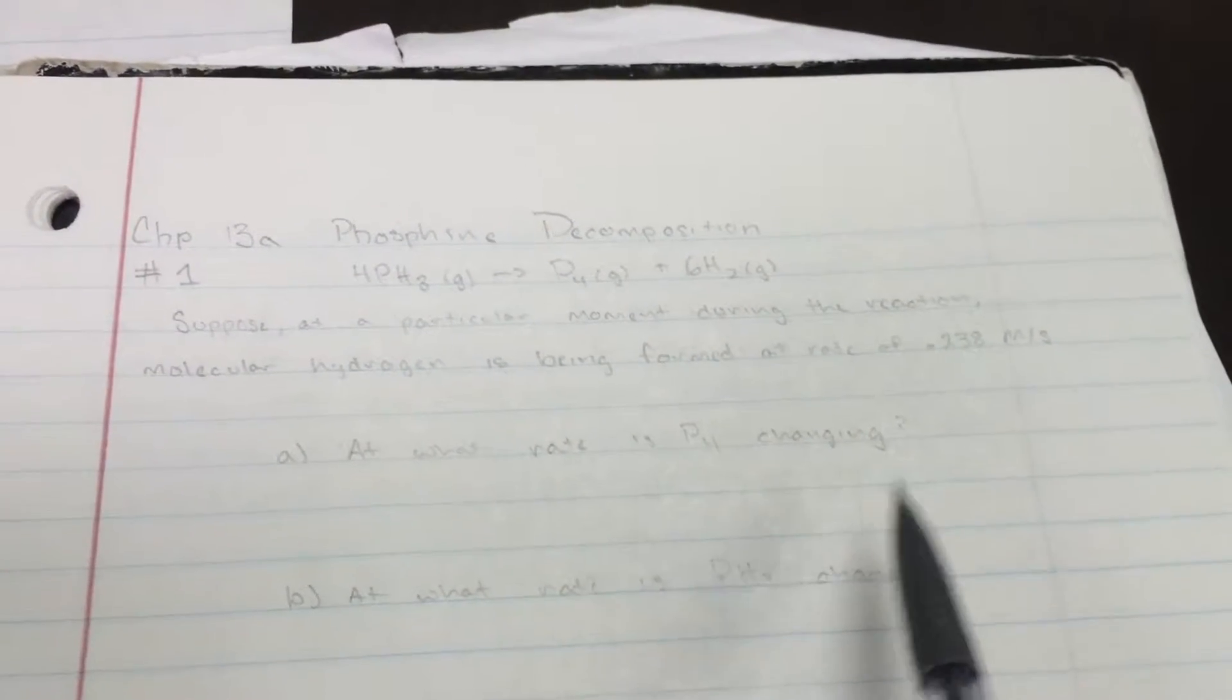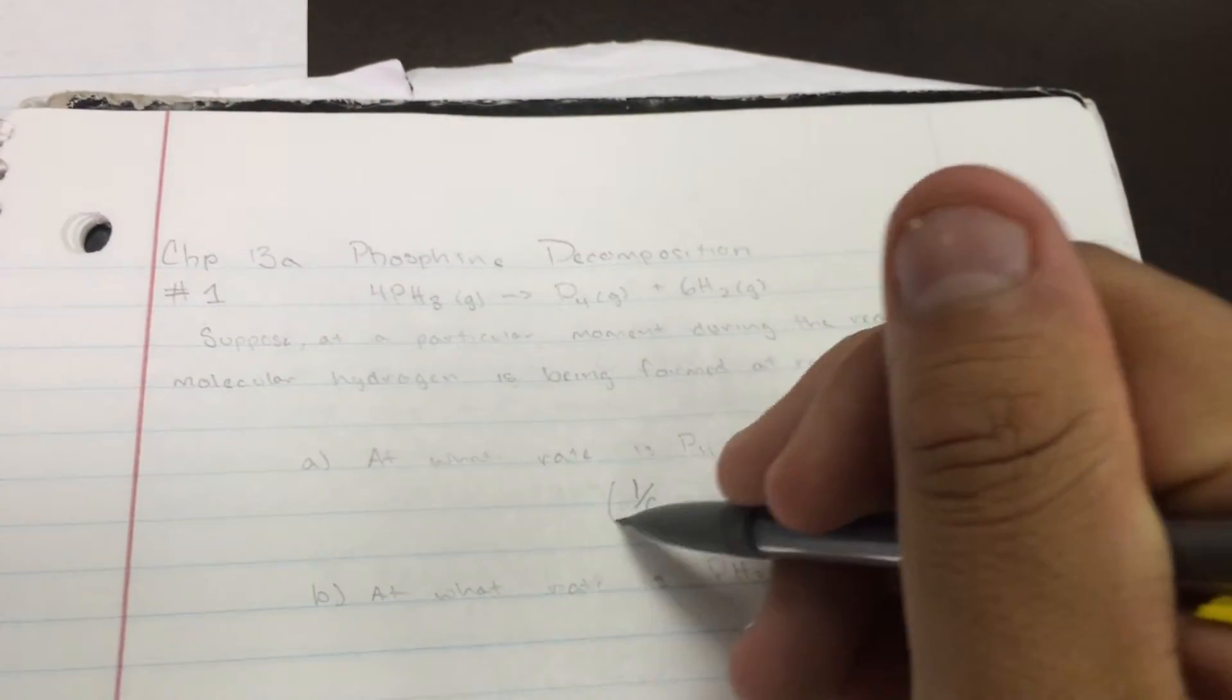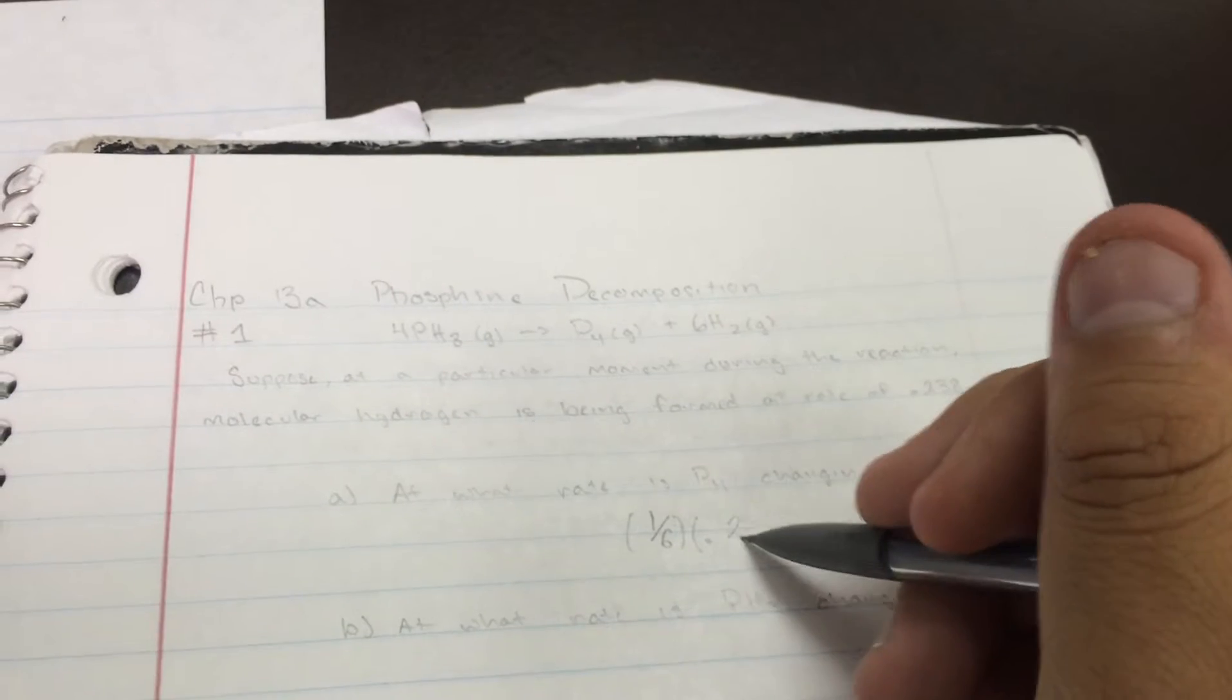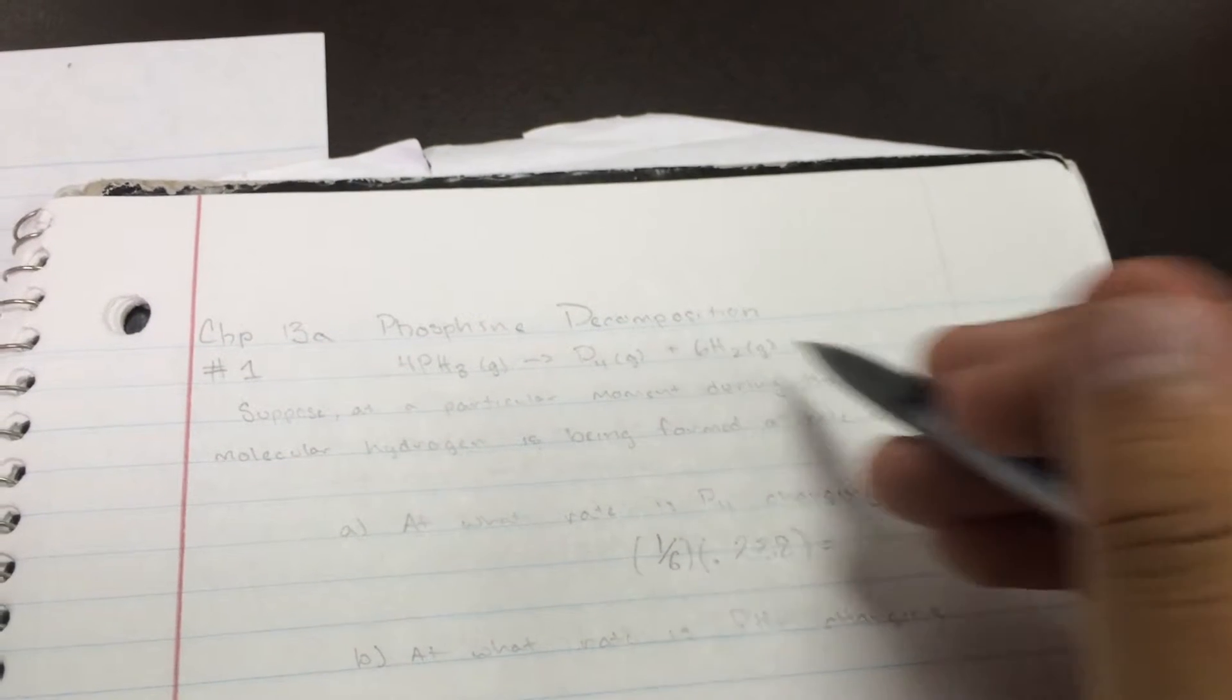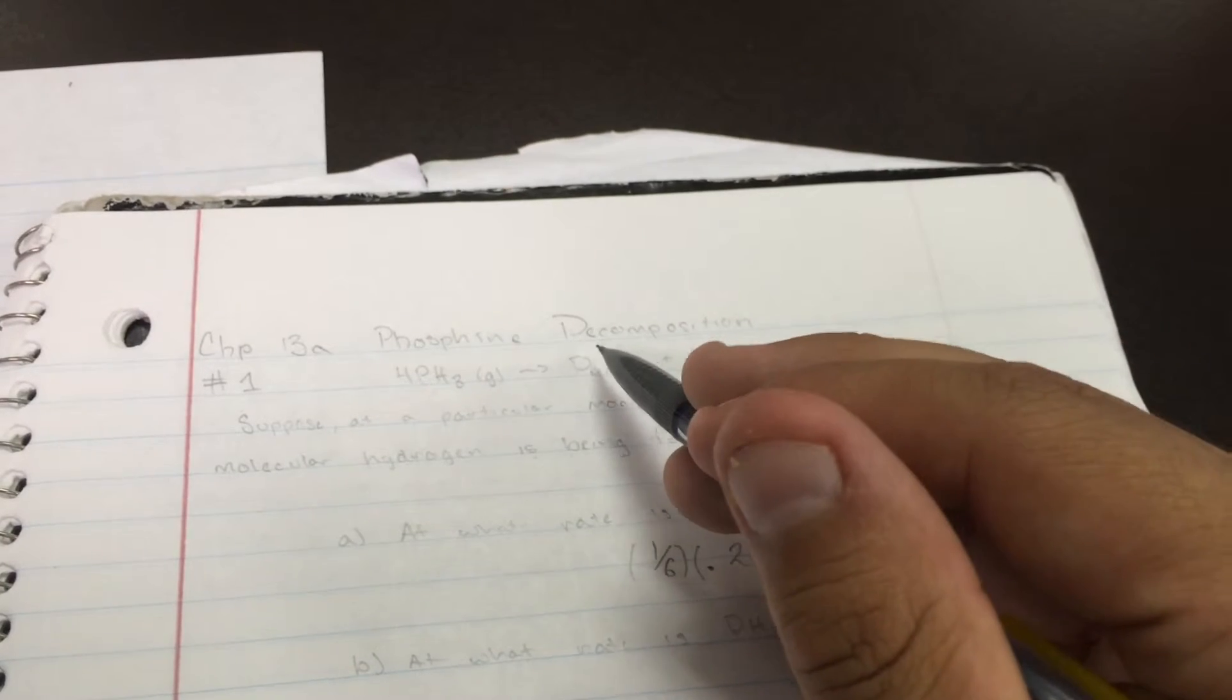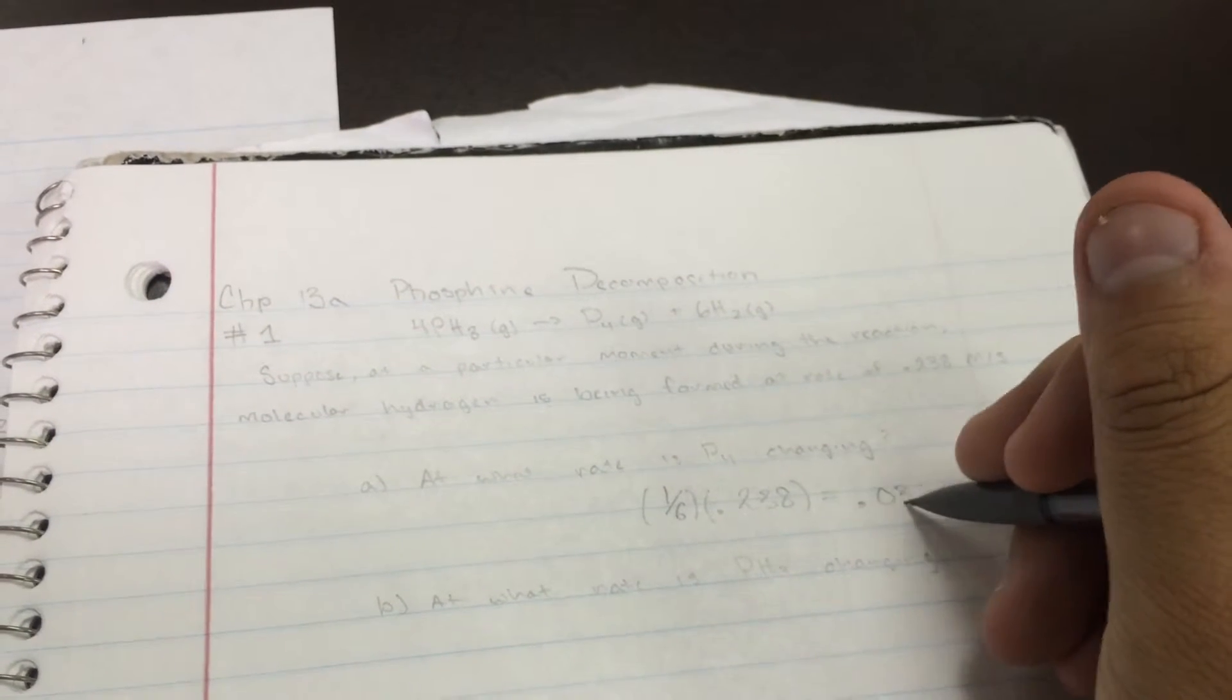So at what rate is P4 changing? The formula you would use for this is 1 over 6 times 0.238, because hydrogen is 6H2, which would be 1 over 6, times 0.238, since we're working with P4. So your answer with this one would be 0.0382.